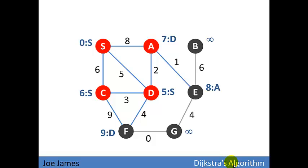Next we visit vertex E. E has two edges to relax. Edge BE gives us a distance to B of 14, so we update B's distance.